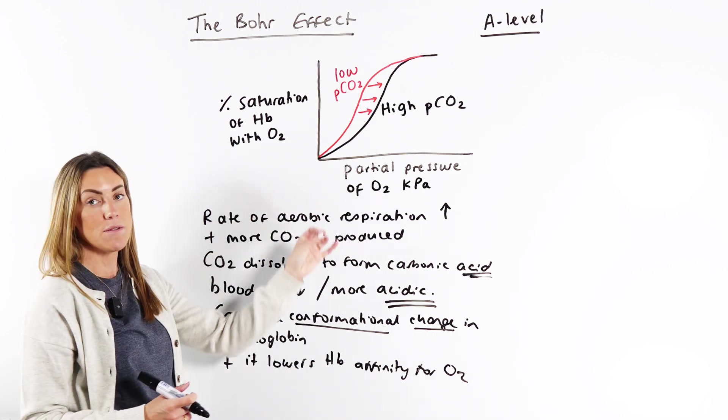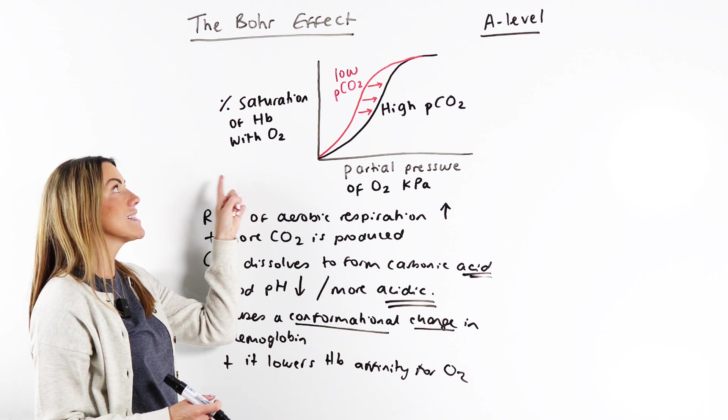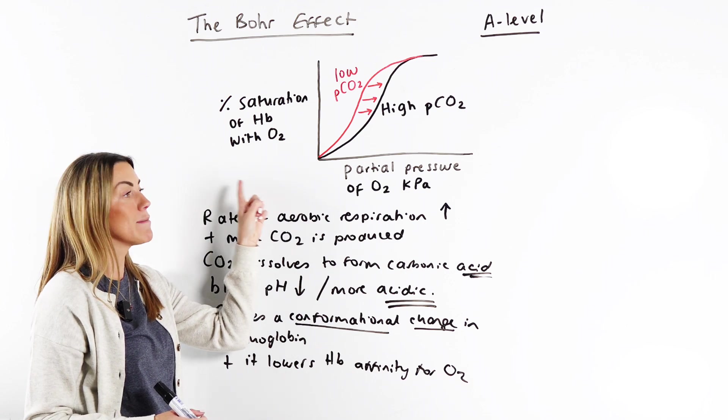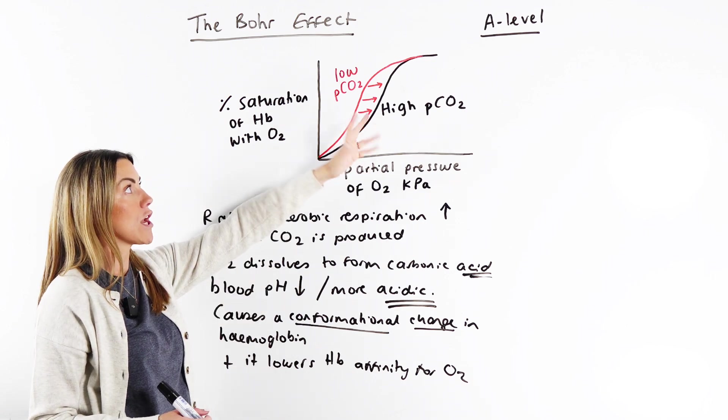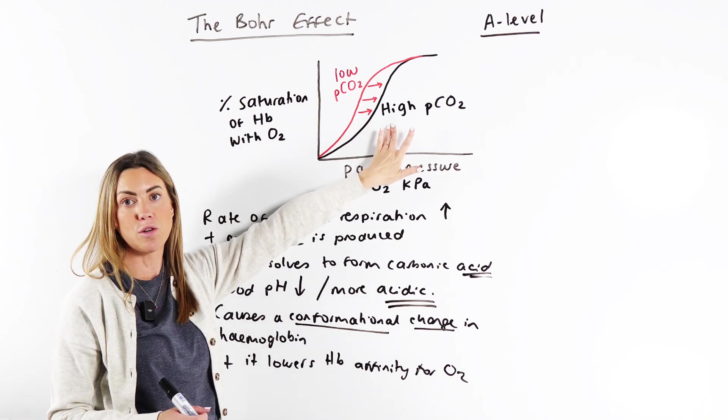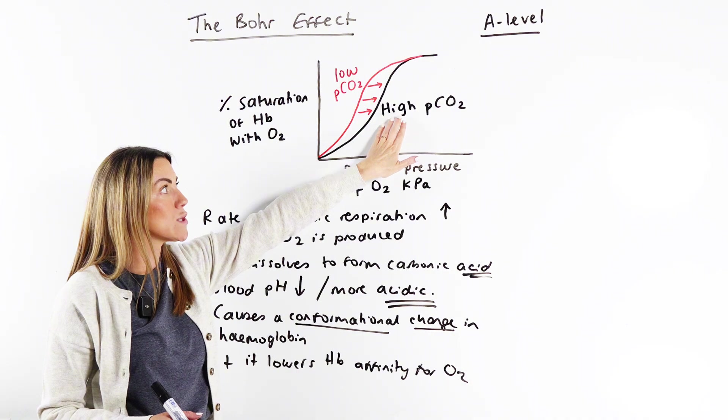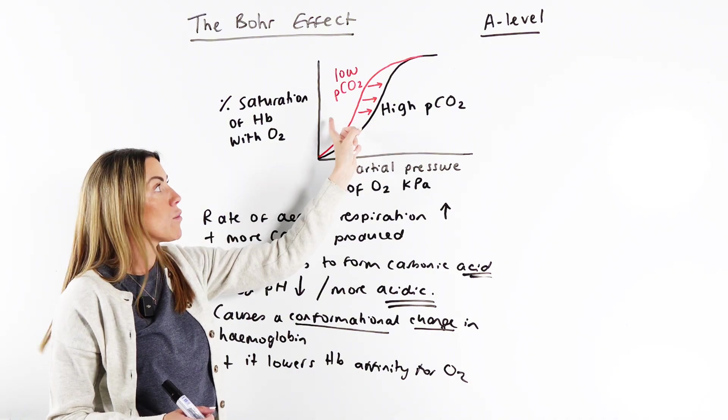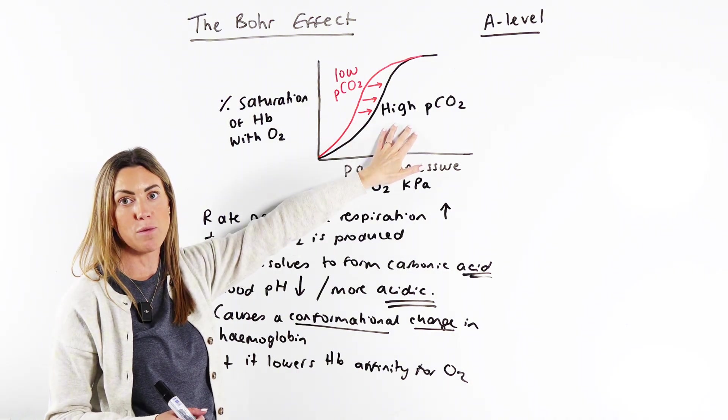So here is our dissociation curve. On the y-axis, we've got percentage saturation of hemoglobin with oxygen. And we've got two scenarios: low partial pressure of CO2, high partial pressure of CO2. Now we're talking about the Bohr shift, so we're shifting to high partial pressure of CO2.